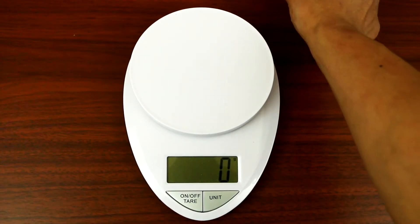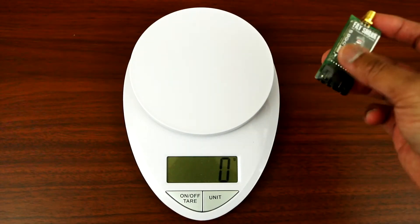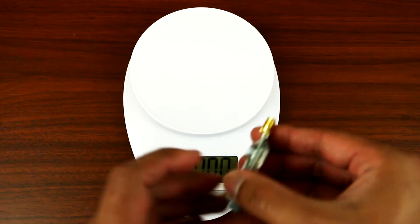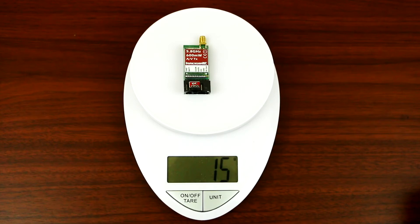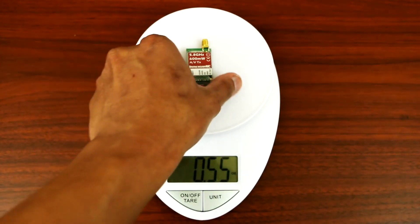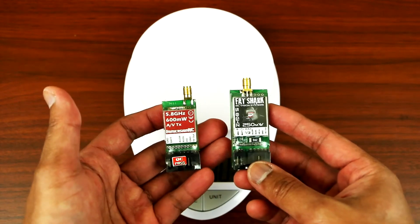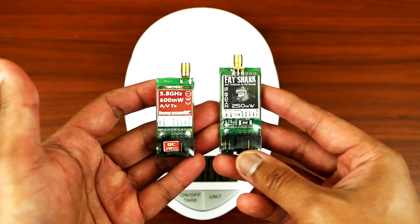Now let's weigh them up. The FatShark is 14 grams. Now for the Emerson RC, it's 15 grams. So it looks like the FatShark is lighter than the Emerson RC. So there you go, guys.